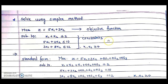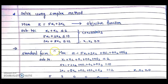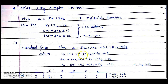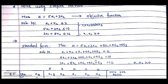In a maximization problem we have to ensure that all constraints are of less-than-or-equal-to type, which they already are here. If not, we have to multiply by minus sign. To write the standard form we have to make them equalities. Since the left side is less than or equal to the right side, we add slack variables s1, s2, and s3. Variables added to constraints are called slack variables; variables subtracted are called surplus variables.